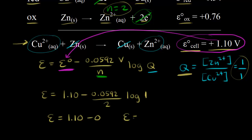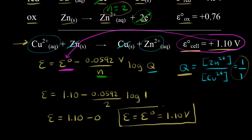So the cell potential is equal to the standard cell potential, which is positive 1.10 volts. This makes sense because E-zero — the standard cell potential, let me highlight that up here — is the voltage under standard conditions. And that's what we have here: our concentrations are one molar, we're at 25 degrees C, and we're dealing with pure zinc and pure copper. So the Nernst equation gives us that the cell potential equals the standard cell potential, as expected.